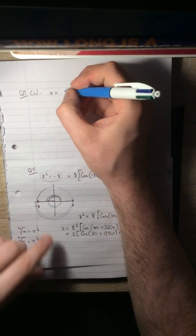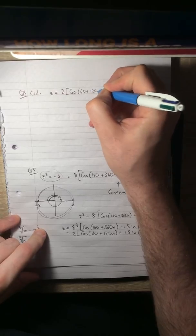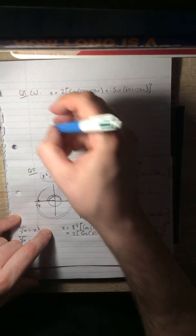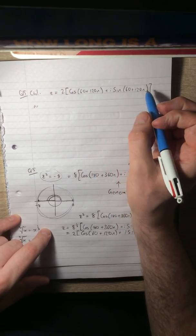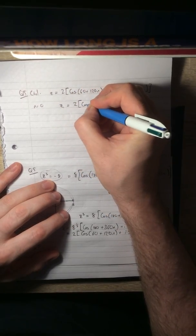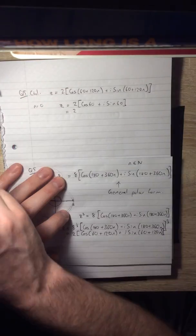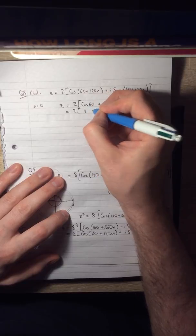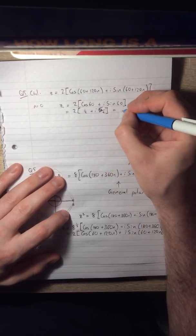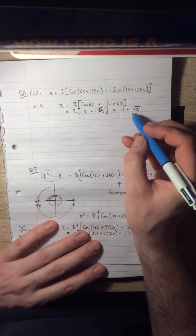You've got that z is going to be 2 cos(60 + 120n) + i sin(60 + 120n). Well, when n is, remember, any integer. So let's start off with when n is 0. Our first root, z₁, is 2 cos 60 + i sin 60. So go to your calculator, cos 60 is 1/2, plus i sin 60 is √3/2. And we get ourselves 1 plus √3i. So there's one of our roots, cube roots of -8.